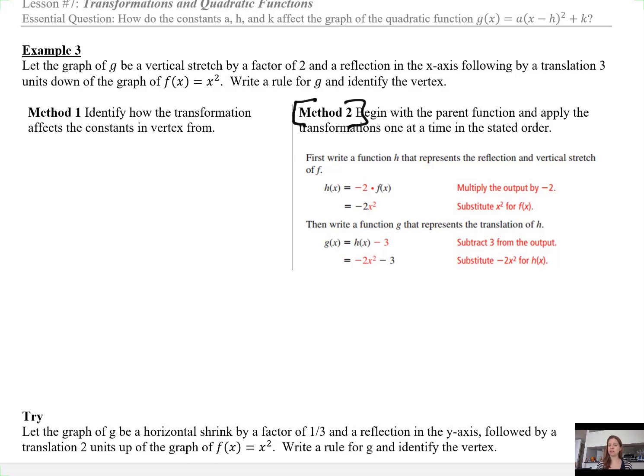Use your knowledge of transformations to apply the transformations in the order they were listed and you'll get the right answer. Now that we have this knowledge of vertex form, you could instead use that to end up with the transformed function. Either method will get you the correct answer if done correctly. So method 1, because we haven't seen this before, identify how the transformation affects the constants in vertex form.